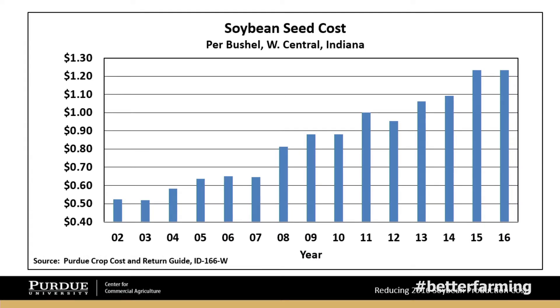Looking at soybean seed cost changes over time in Indiana — this chart goes back to 2002 — seed costs have really increased dramatically on a per bushel of output basis. Back in 2002-2003, soybean seed cost per bushel output was about 50 cents a bushel. The last couple of years, for a lot of operations in Indiana, that number is going to be $1.20 or maybe higher. A couple of things driving that: a lot more technology is embedded in those seeds today than in 2002-2003, including seed treatments. Our challenge is to reduce our cost per unit of output per bushel of soybeans produced.